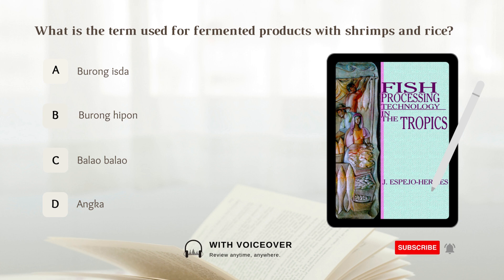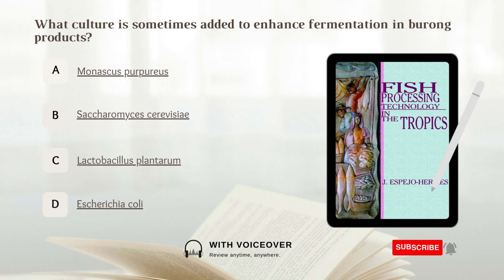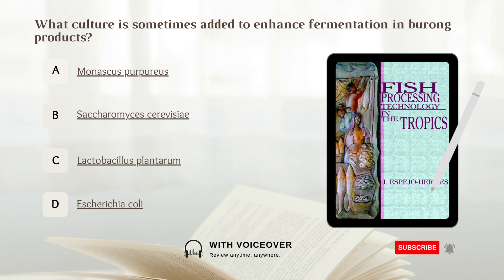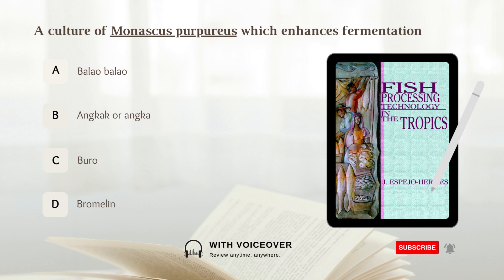What culture is sometimes added to enhance fermentation in burong products? A. Monascus purpureus. B. Saccharomyces cerevisiae. C. Lactobacillus plantarum. D. Escherichia coli. Answer: A. Monascus purpureus, which enhances fermentation.